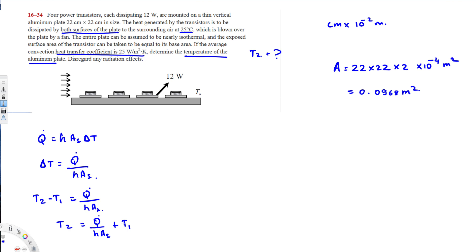We have h and we've found the area, so now we need Q-dot. They say four power transistors each dissipating 12 watts, meaning heat transfer for each is 12 joules per second. To get the total for four transistors we multiply by four, so total Q-dot is 4 times 12 watts, which gives us 48 watts.